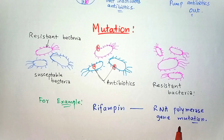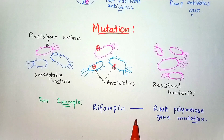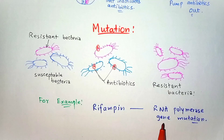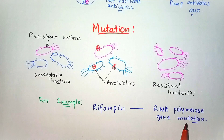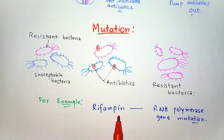The mutation to rifampin is an example of a single-step mutation. In E. coli and Staphylococcus aureus, exposure to rifampin results in a highly resistant strain due to a point mutation in the RNA polymerase gene, such that the polymerase protein no longer binds rifampin, so there is no action of rifampin on the bacterial cell.